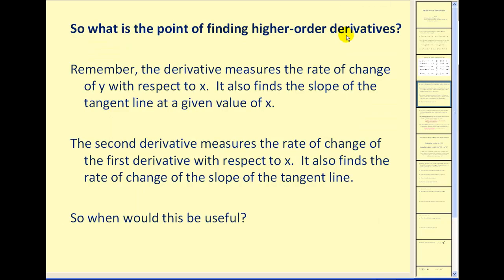So what is the point of finding higher order derivatives? Remember, the derivative measures the rate of change of y with respect to x, and it also finds the slope of a tangent line at a given value of x. The second derivative measures the rate of change of the first derivative with respect to x, and also finds the rate of change of the slope of a tangent line at a given value of x.